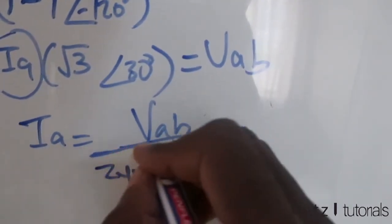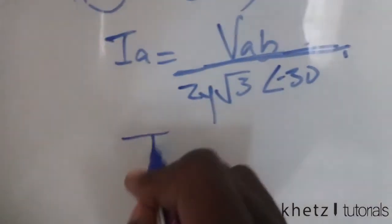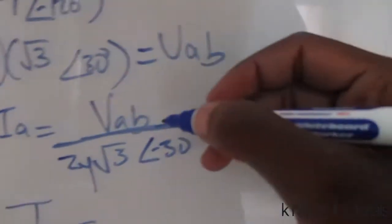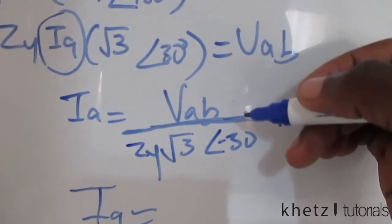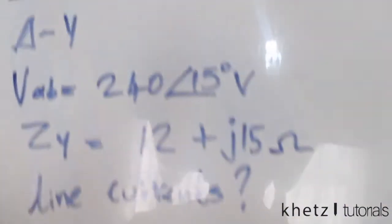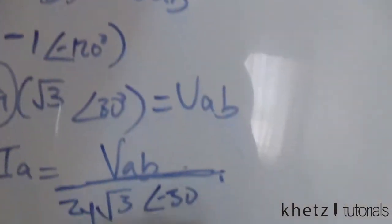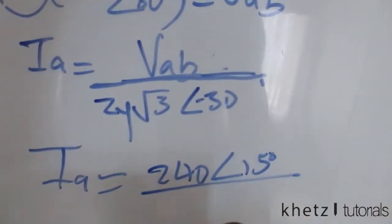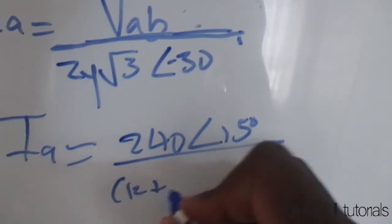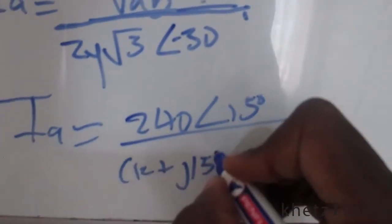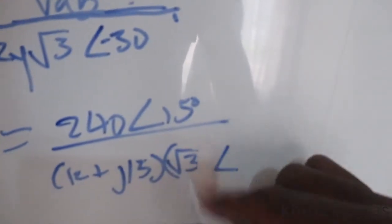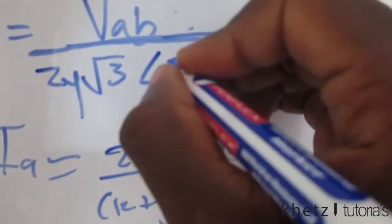Your IA is ultimately just this. Substituting your VAB—you know our VAB, it's given to us in the question as that value over there. So you just basically say 240∠15° divided by Zy, which is also given to us as 12 + j15, and you have √3 multiplying that with an angle of 30 degrees.